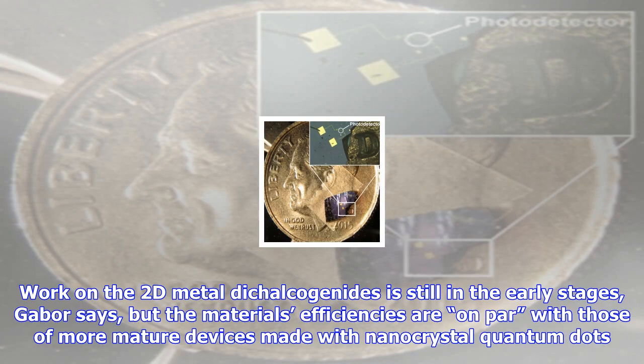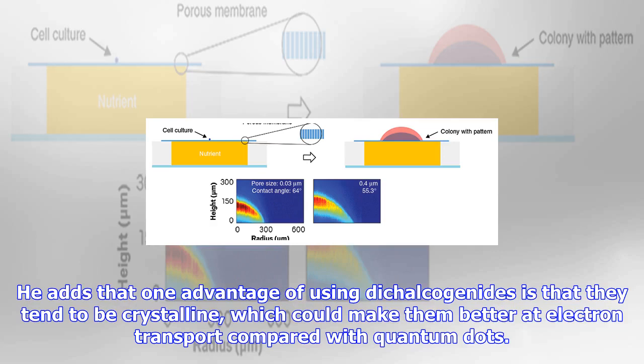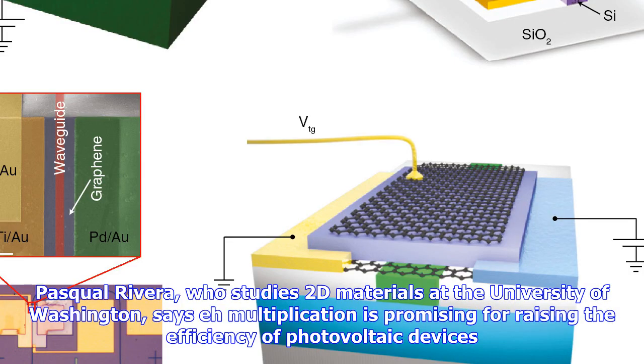Work on the 2D metal dichalcogenides is still in the early stages, Gabor says, but the materials' efficiencies are on par with those of more mature devices made with nanocrystal quantum dots. He adds that one advantage of using dichalcogenides is that they tend to be crystalline, which could make them better at electron transport compared with quantum dots.